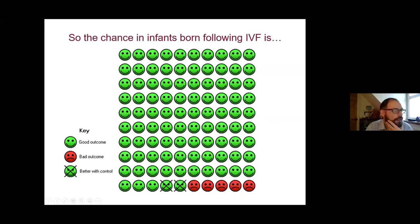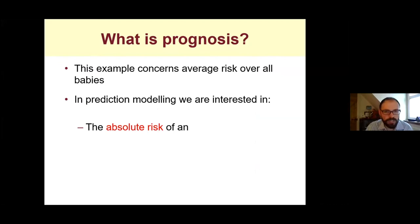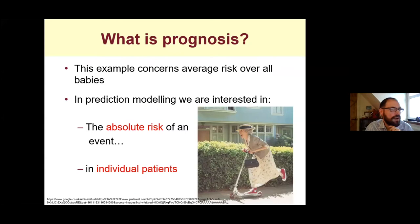This example concerns the average relative and absolute risks over all babies. But in prediction modeling, we're interested in absolute risk not for the overall group of patients but for individual patients. We are all unique — different ages, different comorbidities, different sizes, different biology — and all that variation in personal characteristics results in different individual risks. So how do we estimate risk by factoring all these important clinical characteristics? We use clinical prediction models.